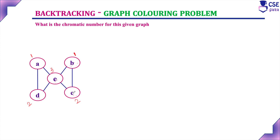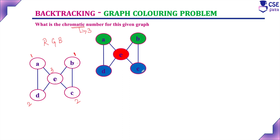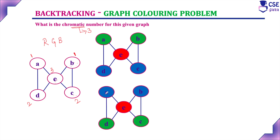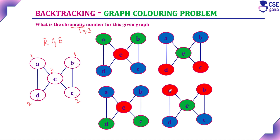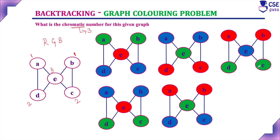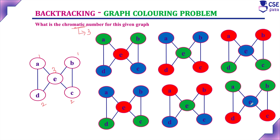The minimum number of colors required to color this given graph is three. For example, with colors red, green and blue: A and B with green, D and C with blue, E with red. Second possibility: A and B blue, D and C green, E with red. Third: A and B blue, E with green, D and C with red. Fourth: A and B with red, D and C with blue, E with green. Fifth: A and B with red, E with blue, D and C with green. Sixth: A and B with green, E with blue, D and C with red. These are all the possible solutions. You can construct the state space tree to identify these solutions.